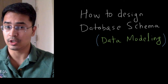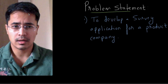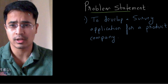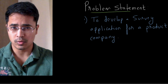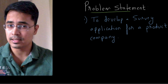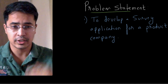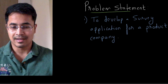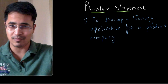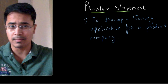This is one of the most commonly asked questions in job interviews, so today we are going to discuss designing a database schema in the context of relational database management systems. I'm going to give you a problem statement: we need to develop a survey application for a product company. The biggest mistake you can make in an interview is to start writing tables, columns, or relationships between tables straight away as soon as you get this one-line problem statement.